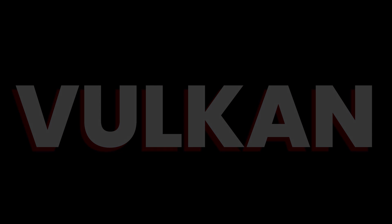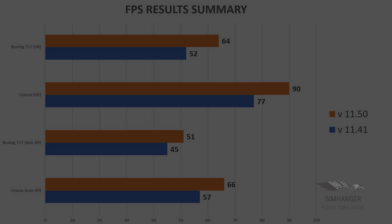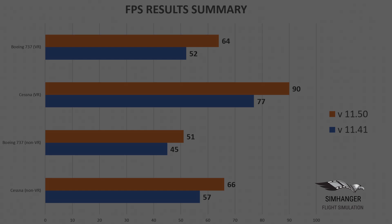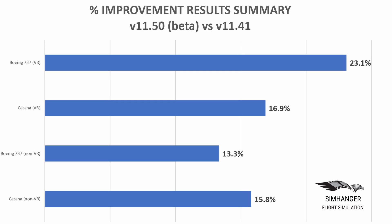Although it's not always the case, in this instance the results reflect the smoothness difference that I felt whilst flying. The orange bar is Vulkan and the blue bar is the previous 11.41 OpenGL version. So Vulkan gave better results and here they're expressed as percentage improvement over the OpenGL version.